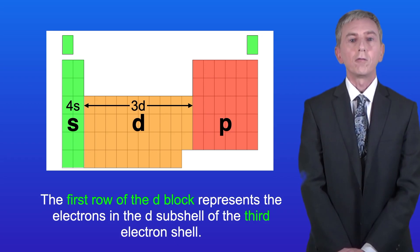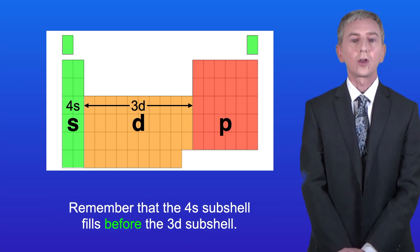The first row of the d block represents the electrons in the d subshell of the third electron shell. Remember that the 4s subshell fills before the 3d subshell.